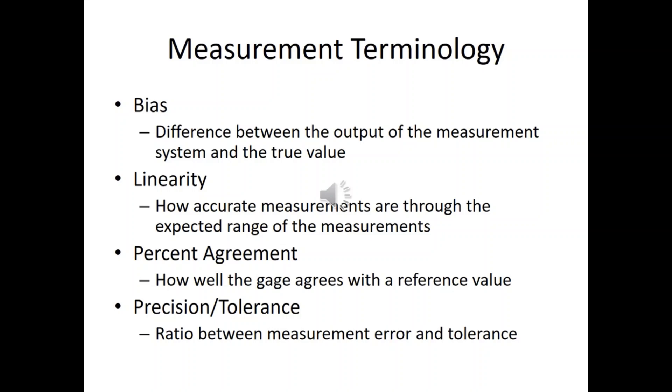Percent agreement. How well the gauge agrees with the reference value. Think gauge blocks here. So this is basically for the calibration. And precision and tolerance. This is the ratio between the measurement error and the tolerance. Again, you want to be able to get down to one-tenth of what the tolerance is and gauge it accurately.